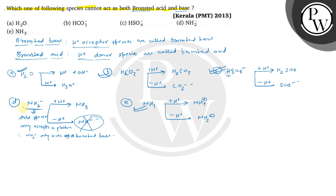But only option D, which is NH2-, cannot behave as both Bronsted acid and base. So option D is our final answer. I hope you understood. Best of luck.